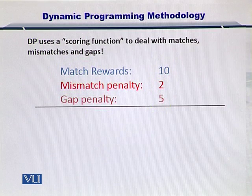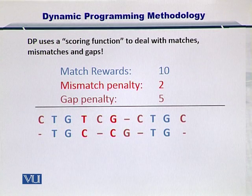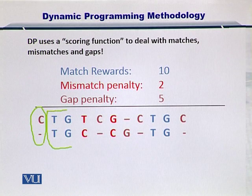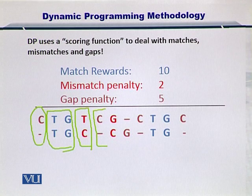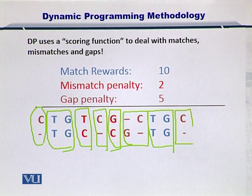Let's align two sequences. I have aligned them previously so we can quickly compute the score. You can see there is a gap, then two matches, then a mismatch, then a gap, then another match, then gap, gap, match, match, and finally a gap.